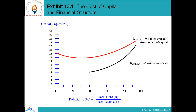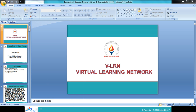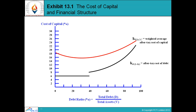The cost of capital and financial structure is shown by figures like debt ratio equal to total debt D upon total assets V (value of firm). The red line indicates the weighted average cost of capital. WACC is calculated using the formula: W1×KE + W2×KD + W3×KP + W4×KT + W5×KT, where W1, W2, etc. are the proportions of each capital component.